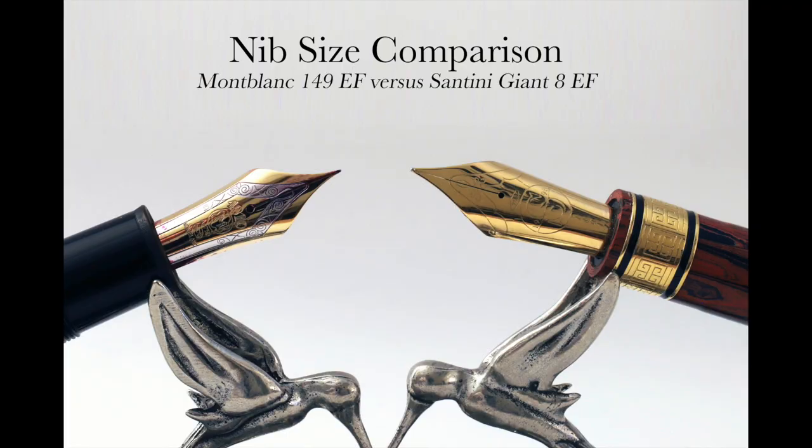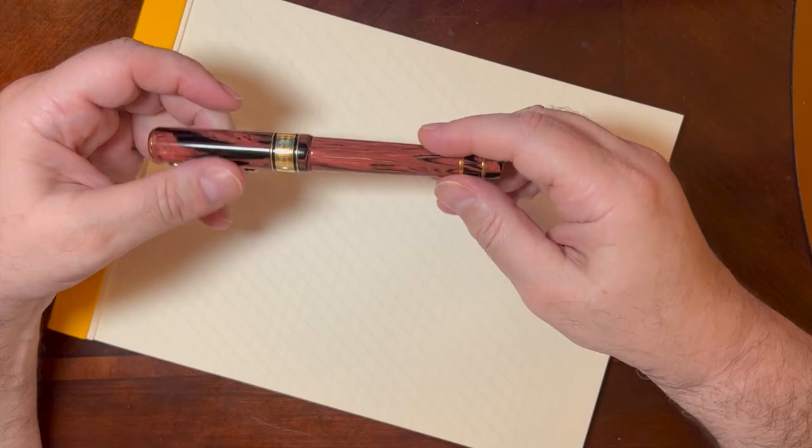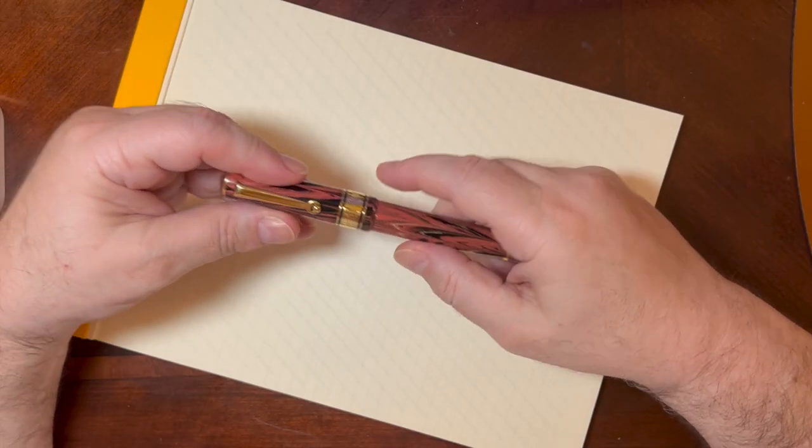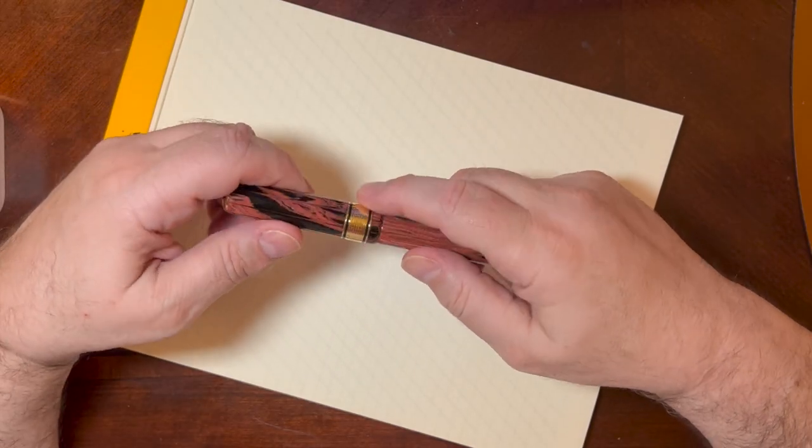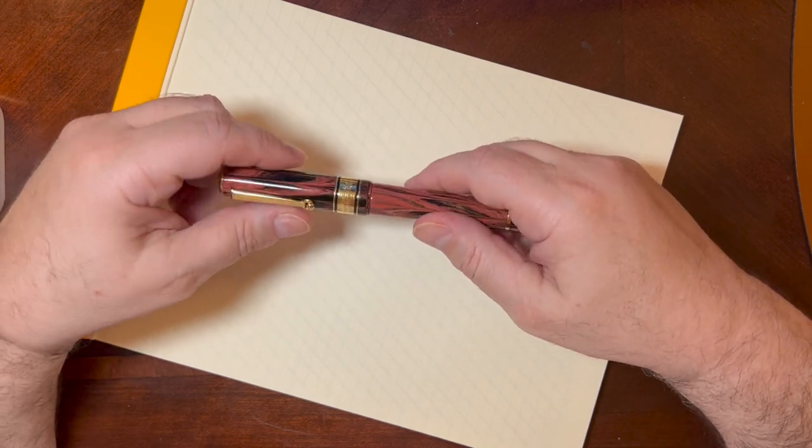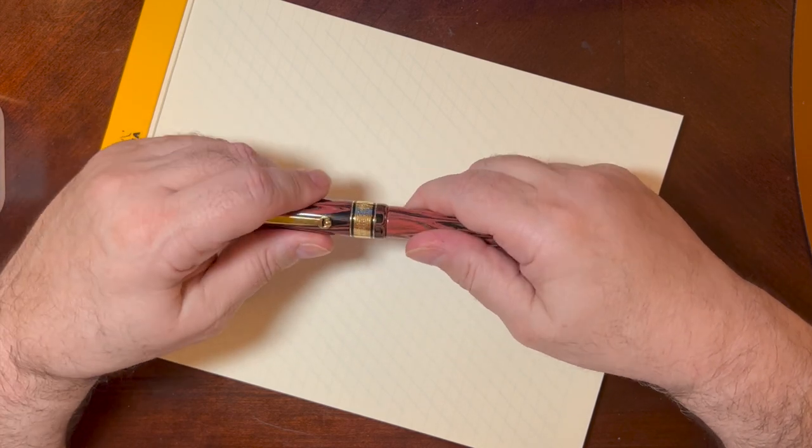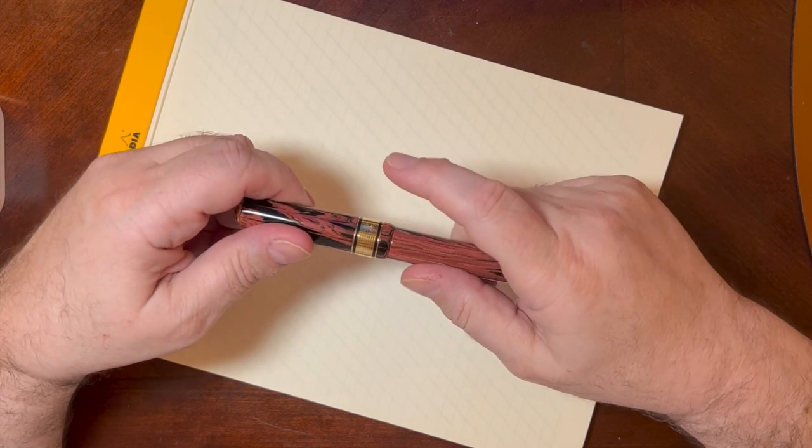This is a beautiful what they call lava ebonite pen with gold trim, and it's notable that the Greek key cap band here is actually vermeil gold plating over sterling silver. There's actually a sterling silver mark on this pen.